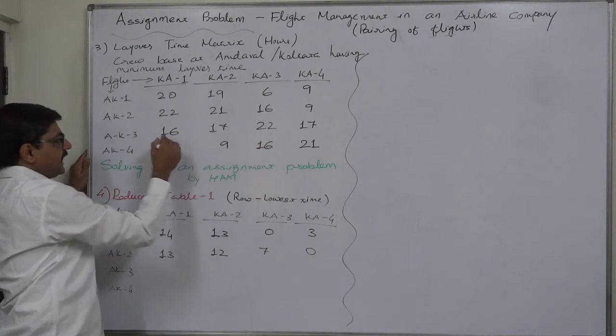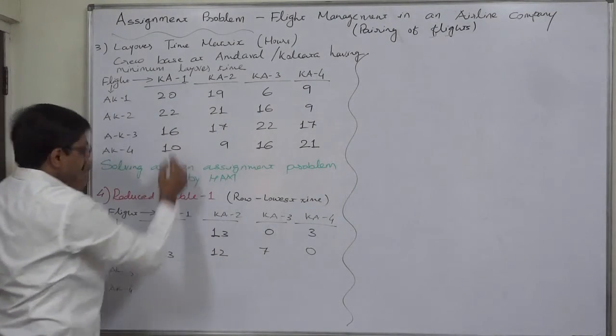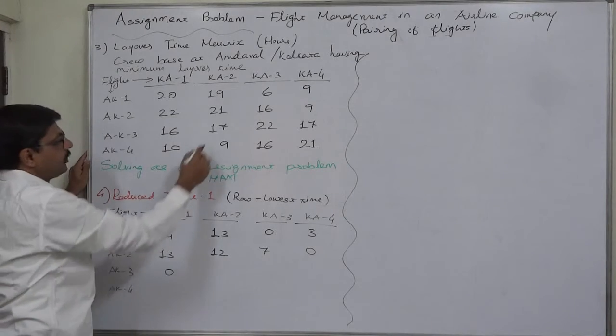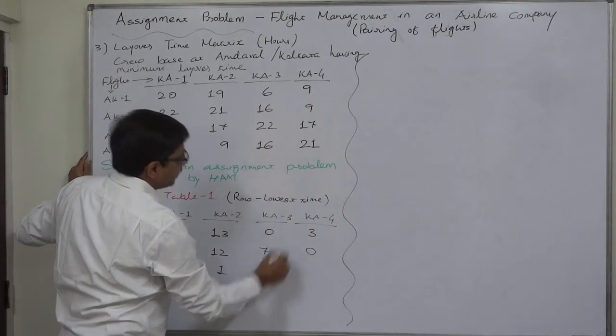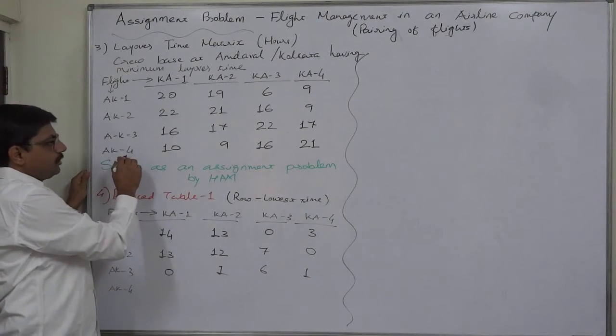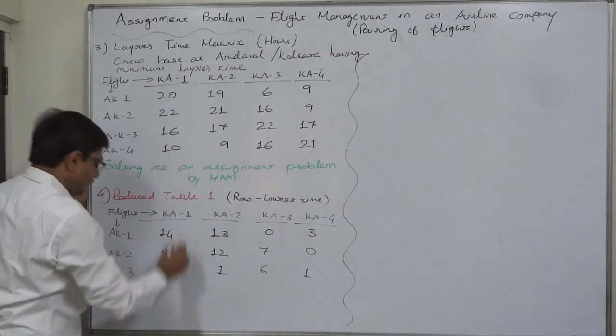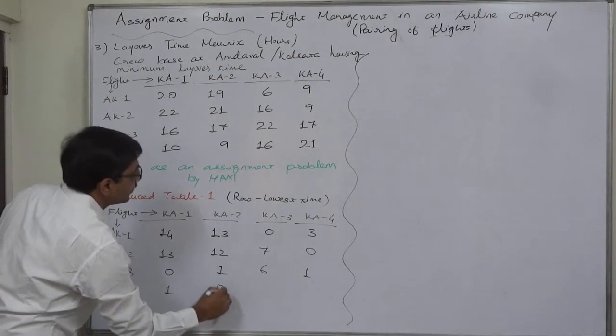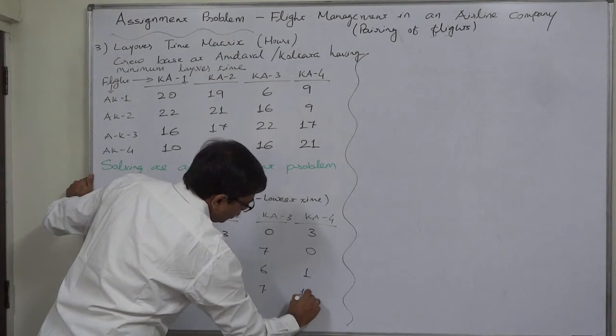Third row, the lowest time is 16. We are going to subtract 16 from all these 4 values. 16 minus 16 is 0. 17 minus 16 is 1. 22 minus 16 is 6. 17 minus 16 is 1. And the last row, the lowest time is 9. 10 minus 9 is 1. 9 minus 9 is 0. 16 minus 9 is 7. 21 minus 9 is 12.